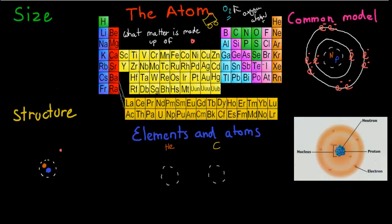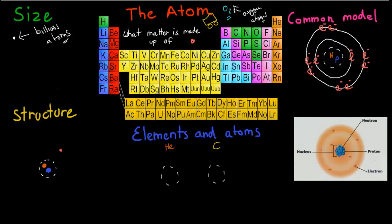The atom itself is tiny. If you look at the size of an atom — if we take this dot, for example — this dot would have billions of atoms. They are really, really small. There would be billions of atoms, and you would actually need a light microscope to be able to see it. You can't see them with the naked eye; you would need a light microscope to see those tiny atoms.